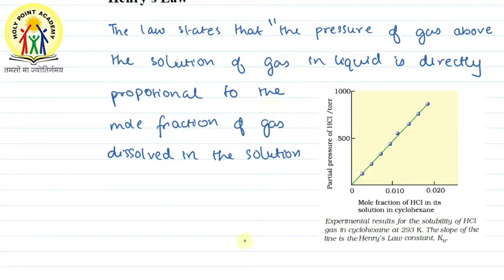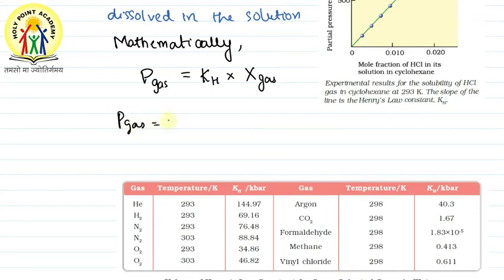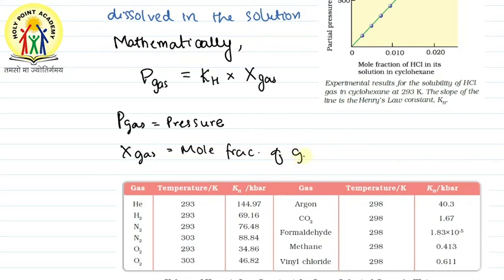This is Henry's Law, and if we see it mathematically, the pressure of gas equals KH multiplied by the mole fraction of the gas — written as x(gas). So you have gas pressure on the left, and x(gas) which is the mole fraction of gas in solution on the right.